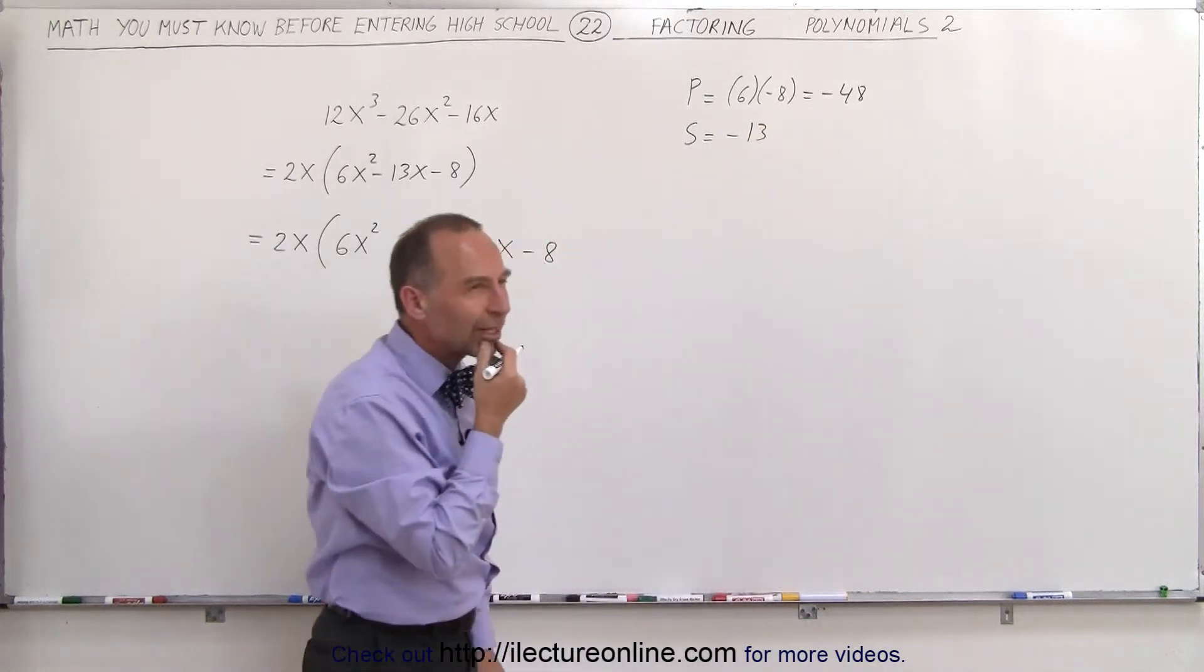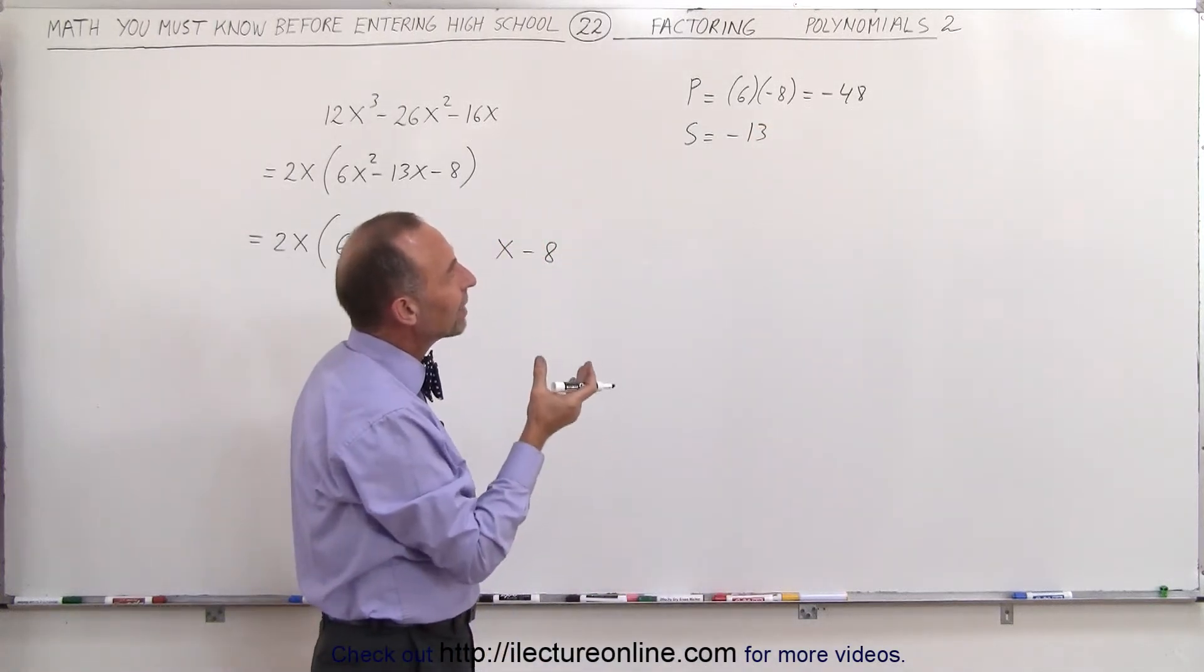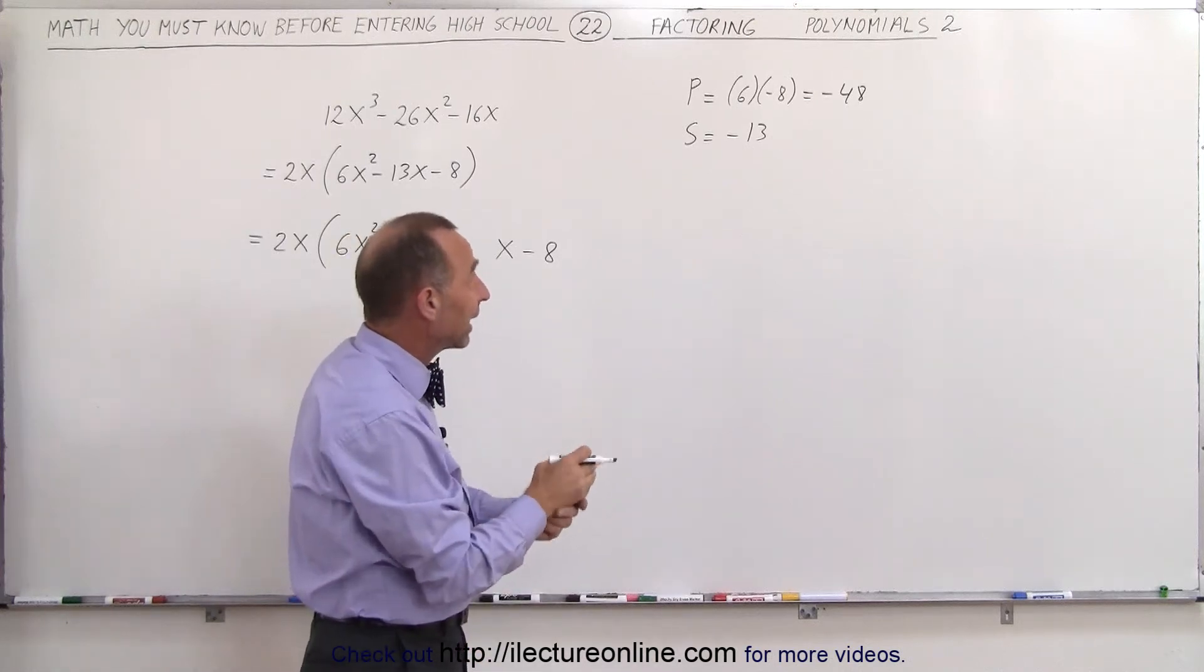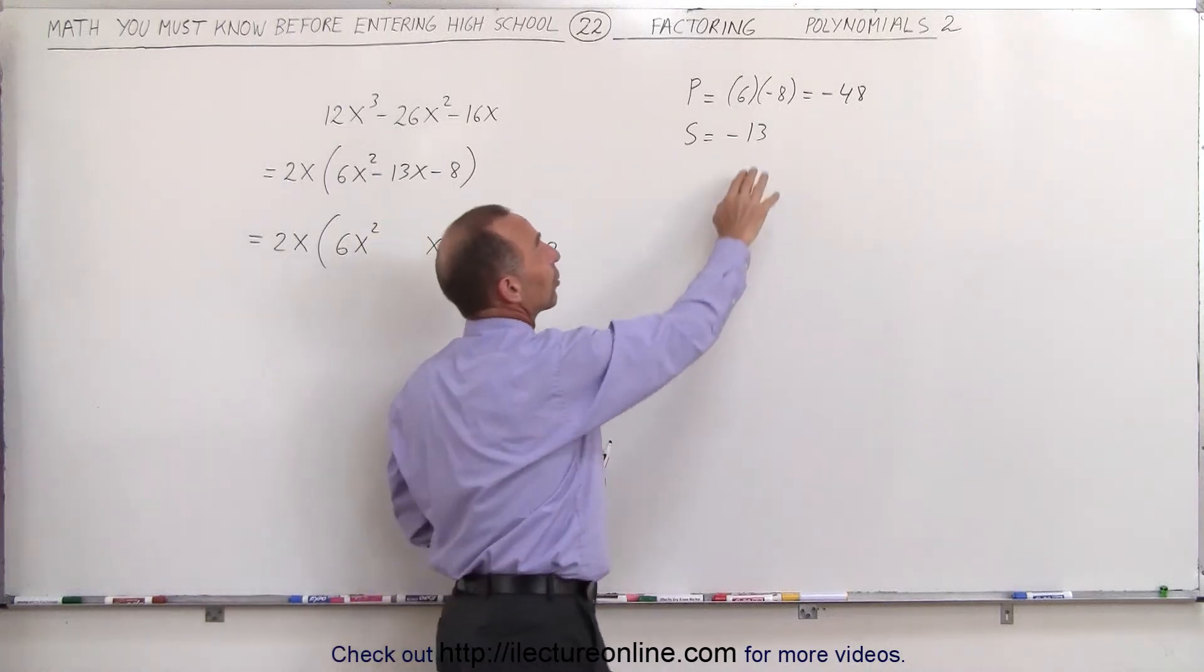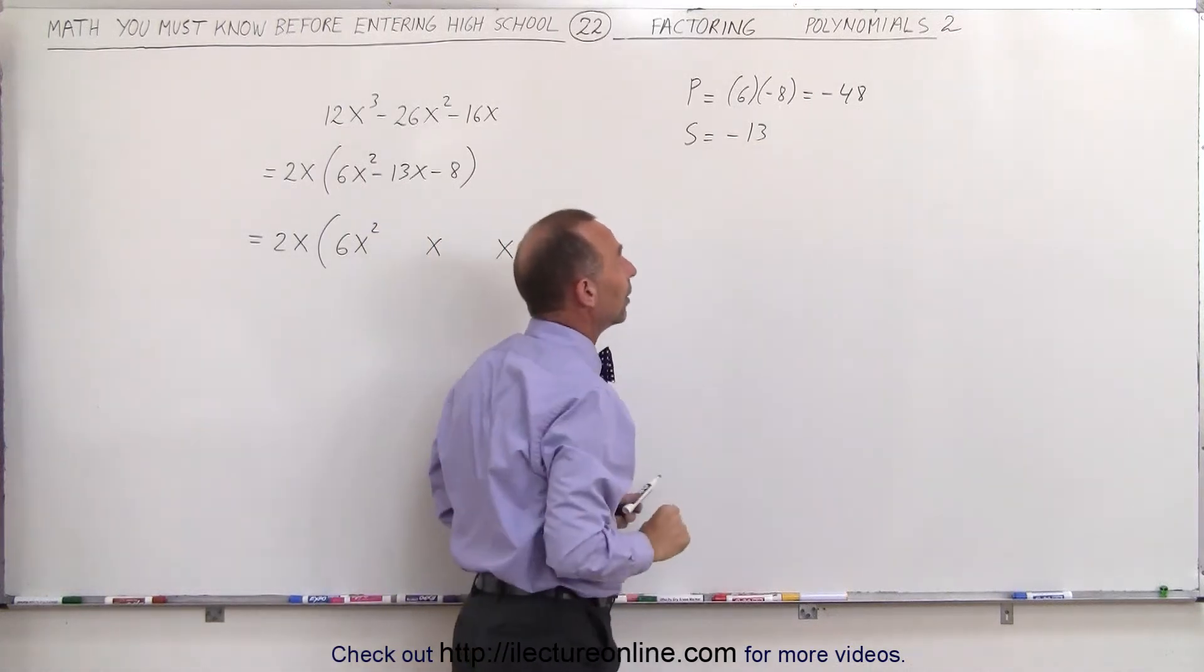So what numbers can I multiply together to get a negative 48, and when I add them together, I get a negative 13? Well, that means one number must be 13 bigger than the other number, and it must be the negative one.